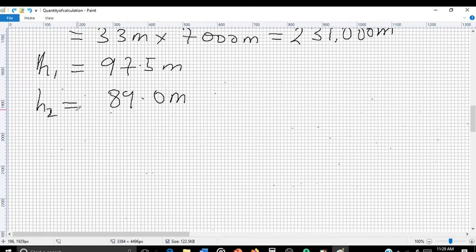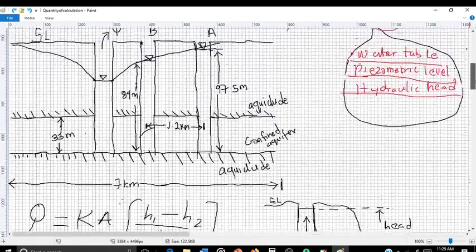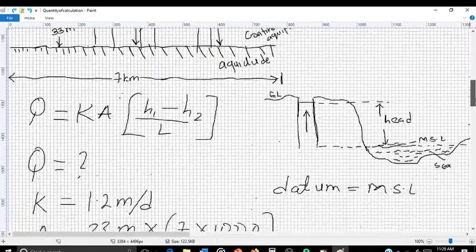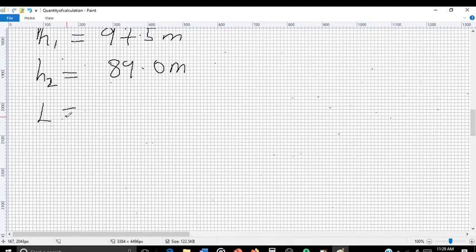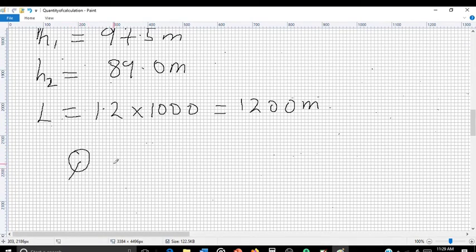Lastly, we have the distance between the two observation wells, which is 1.2 kilometers. Again, we are going to convert the 1.2 kilometers to meters. So 1.2 times 1,000, which equals 1,200 meters.